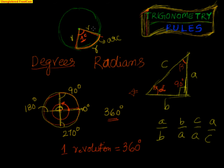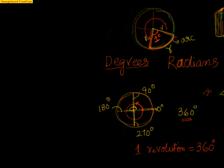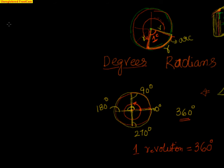Now tell me: suppose instead of the arc length being R, suppose the length is the total circumference — that means I have moved my radius all the way around and it comes back and coincides. That means I have moved a whole 360 degrees. By definition, radius is R, length of arc is R, angle is 1 radian.